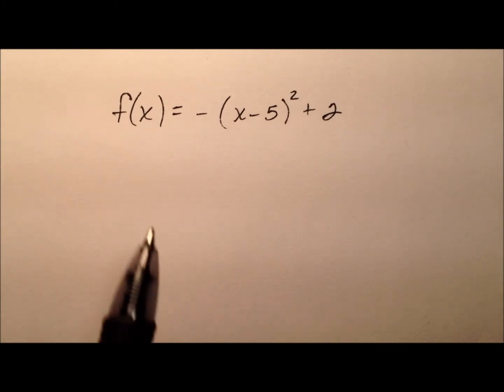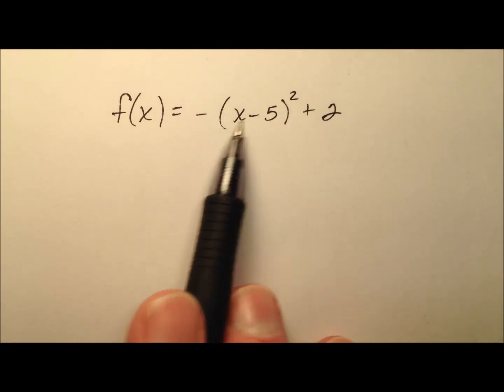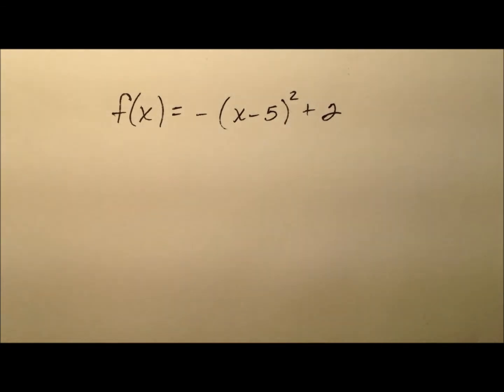In this example, we're going to take a look at this function f, which appears to be a quadratic function written in vertex form, and we're going to find the inverse of this function. If this is something you would like to try on your own first, go ahead and pause the video and do so, and come on back and we'll find the inverse together.